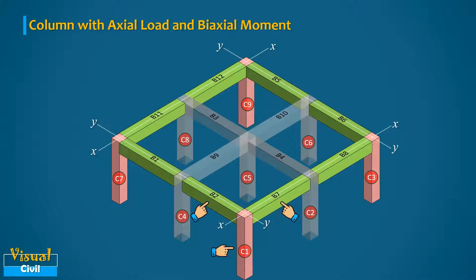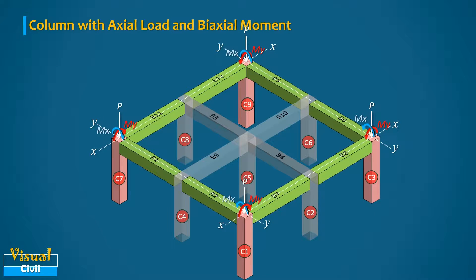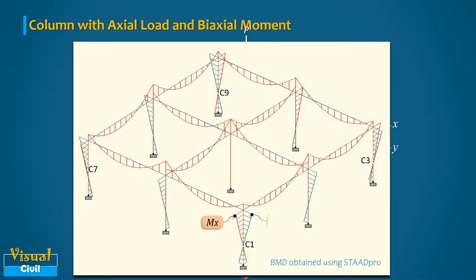As the moment caused by both beams is not balanced on the other side, column C1 will be subjected to biaxial moment. Similarly, all other corner columns will also be subjected to biaxial moment due to the same situation. This can also be seen in the bending moment diagram obtained through three-dimensional frame analysis in STAAD Pro software.